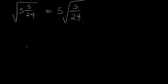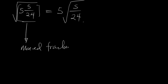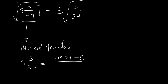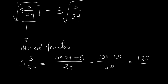To prove this, the expression on the left-hand side contains a mixed fraction inside the square root. A mixed fraction — if you have 5 whole number 5 over 24, this is the same thing as saying 5 times 24 plus 5 divided by 24. So 5 times 24 gives you 120, plus 5 over 24, which gives you 125 over 24.